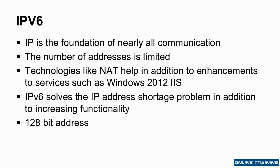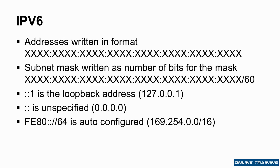The big difference between IPv4 and IPv6 is the address. If IPv4 is a 32-bit address, an IPv6 address is 128 bits. It's written in a slightly different format, with each part being 16 bits — written as four hexadecimal digits in each part.